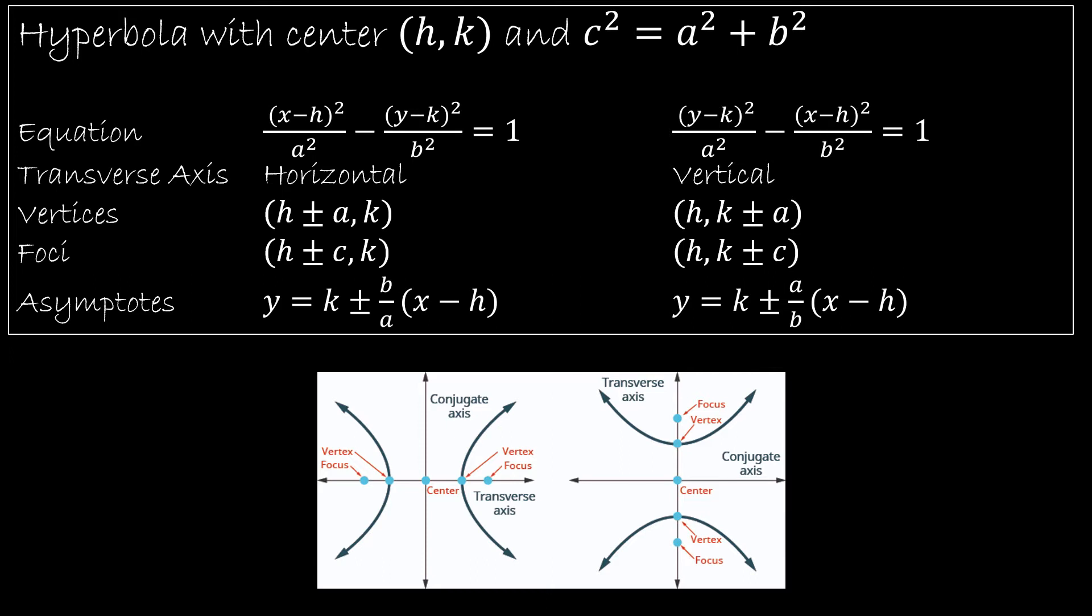because we're dealing with subtraction, we're dealing with minus in between, we're looking at the absolute value of the difference being constant. The other thing I want to point out that I didn't point out in the 10.11 video is that the relationship between C, A, and B is a little different. So instead of C squared being A squared minus B squared, as it was in the ellipse, for the hyperbola, C squared is equal to A squared plus B squared.